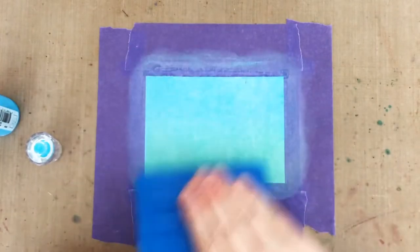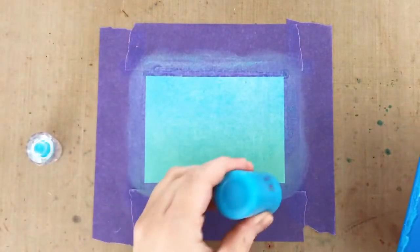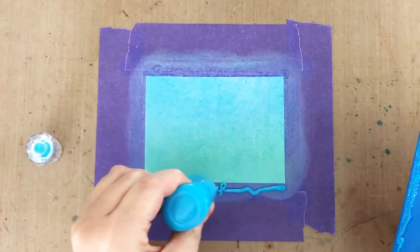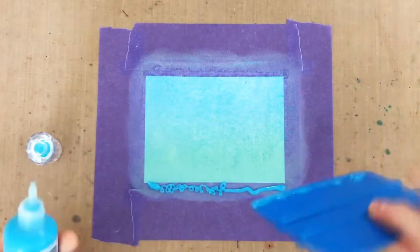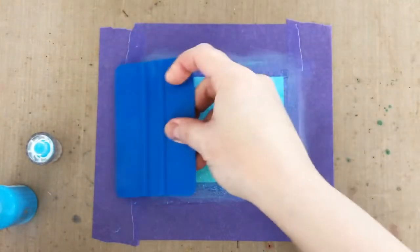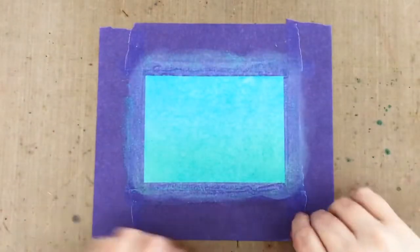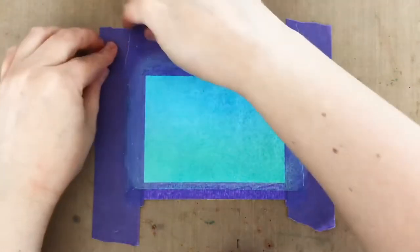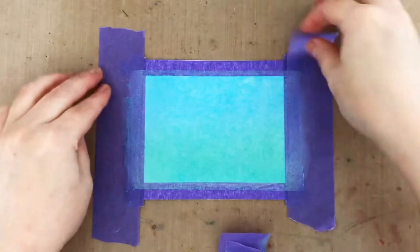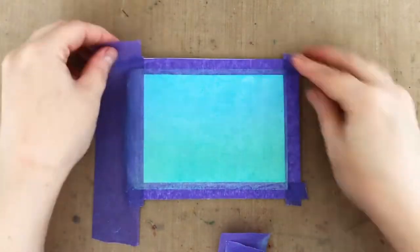Now since the Oxide inks are water reactive and Nuvo drops are water based, I'm applying the drops along the edge of the tape to avoid making any big water marks in my ink blended background. And then I'm just spreading it out with a squeegee. I clean off my squeegee while the drops are still wet and then pull my big layer of tape off so I can set the card aside to dry.